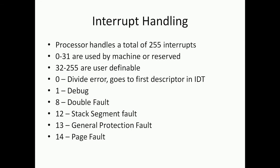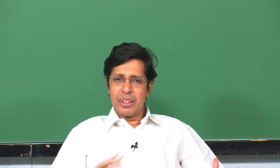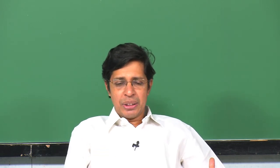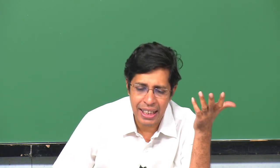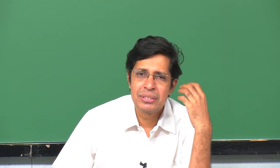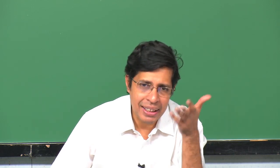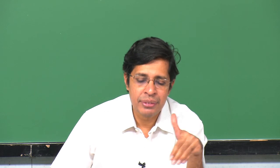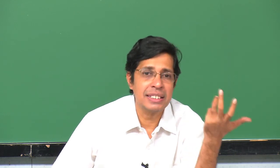In summary, what we have seen is about task switching — switching from any privilege level to any other privilege level — but to switch I need to go through several checks and balances: through a task gate, through a TSS descriptor. Similarly for interrupts, I may handle them directly via an interrupt gate, or I can go through a task gate which goes through a TSS descriptor and then performs a task switch.